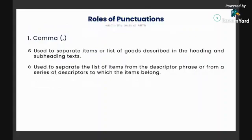Now let's move on to the roles of punctuations. We have three types of legal notes: inclusion or covered, exclusion or not covered, and definition. For punctuations in the Harmonized Tariff Nomenclature, first we have the comma — it is used to separate items or a list of goods describing the heading and subheading text. It is also used to separate the list of items from the descriptor phrase or from a series of descriptors to which the items belong.